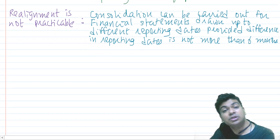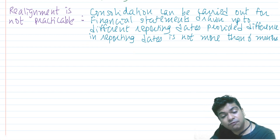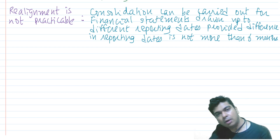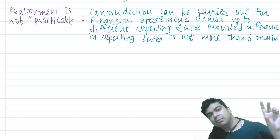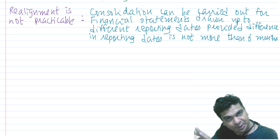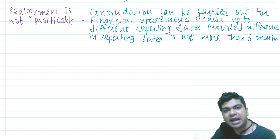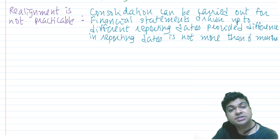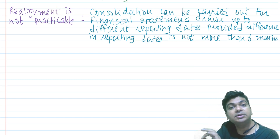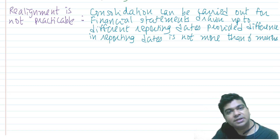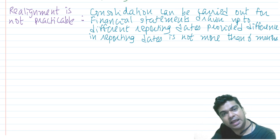What if this is also not practicable? No problem — go ahead and carry out consolidation even if the reporting dates are different, for example, parent on 31st March and subsidiary on 31st December. All that AS-21 requires is that the difference in the reporting dates should not be more than six months. If the gap is not more than six months, you can go ahead and carry out the consolidation.